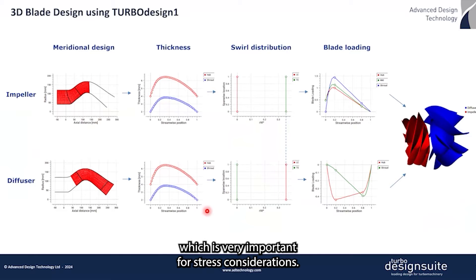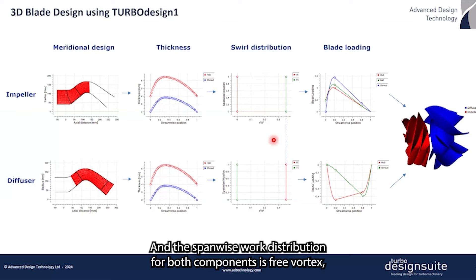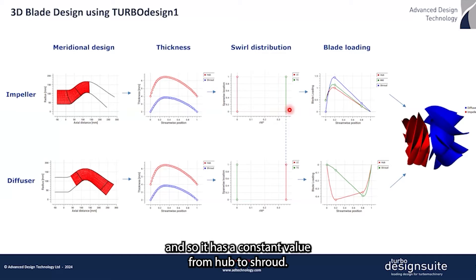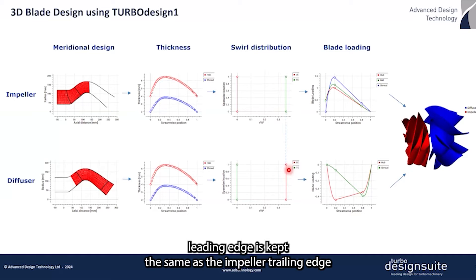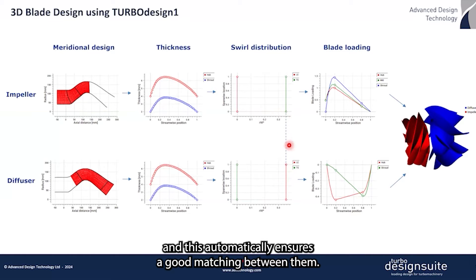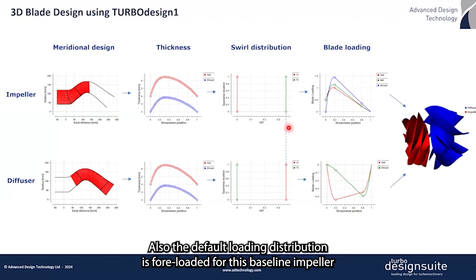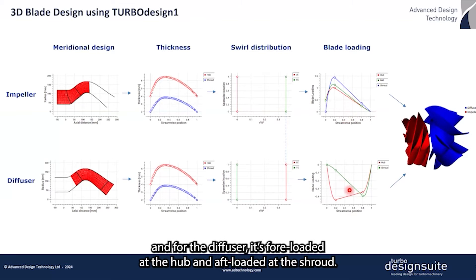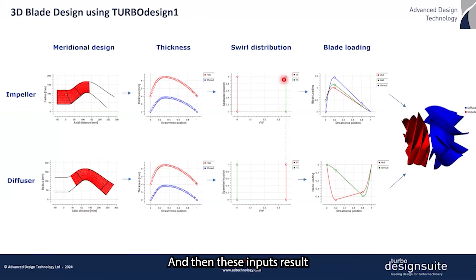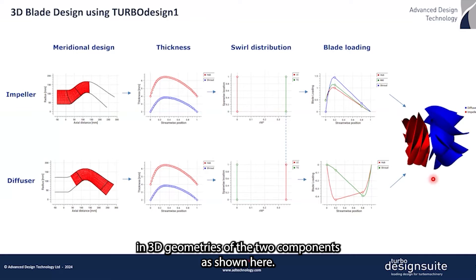This is very important for stress considerations. The span-wise work distribution for both components is free vortex, so it has a constant value from hub to shroud. The RVT* at the diffuser leading edge is kept the same as the impeller trailing edge, which automatically ensures good matching between them. The default loading distribution is fore-loaded for this baseline impeller, and for the diffuser it's fore-loaded at the hub and aft-loaded at the shroud. These inputs result in the 3D geometry of the two components as shown here.